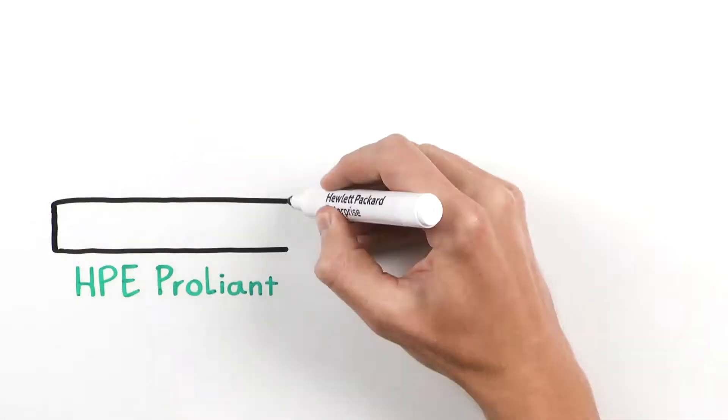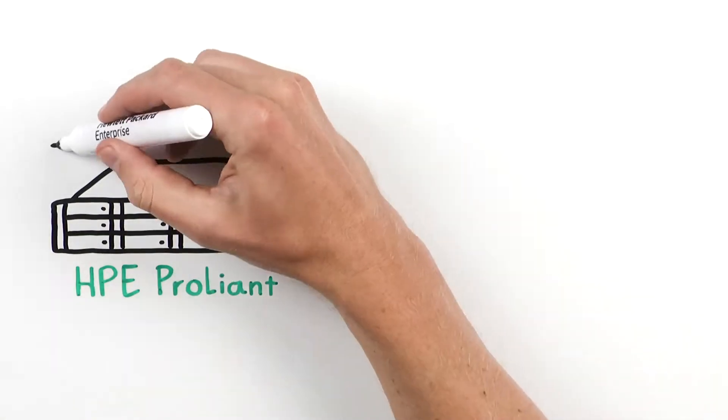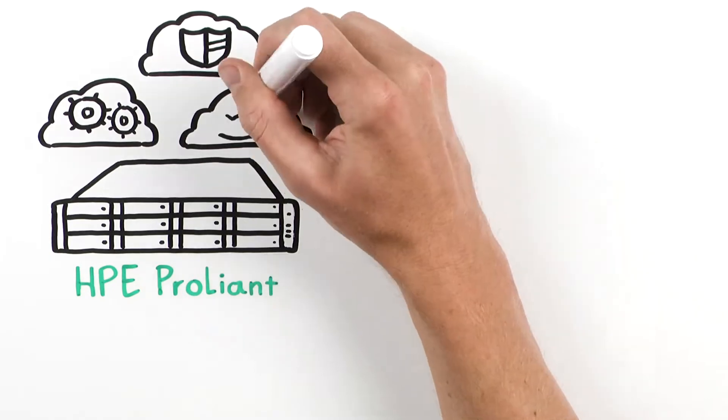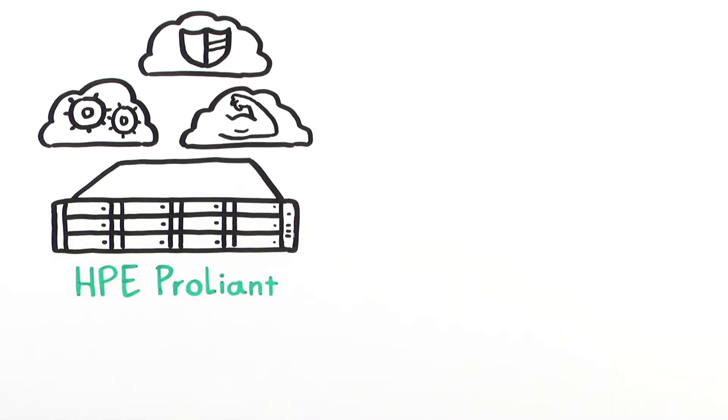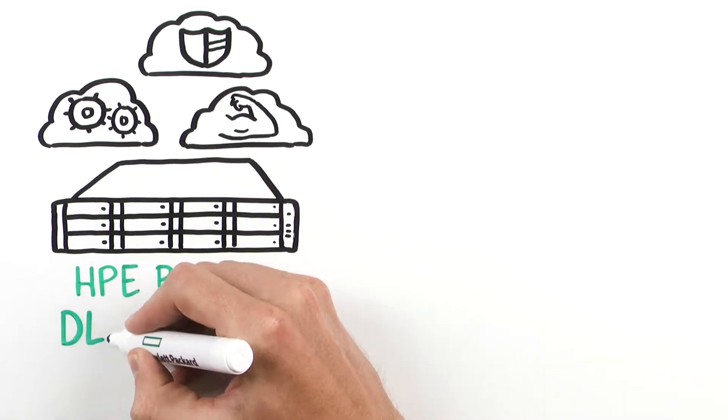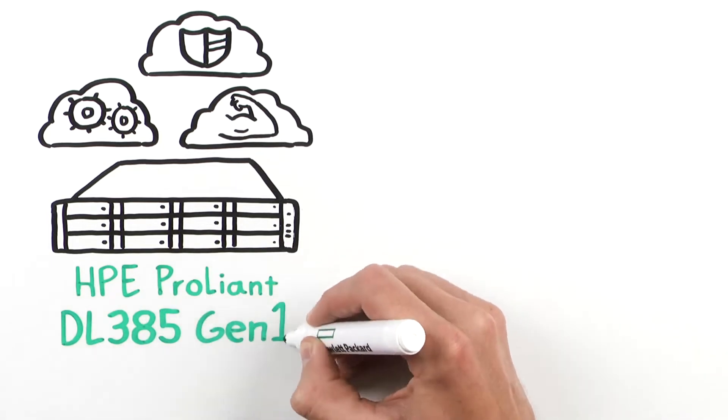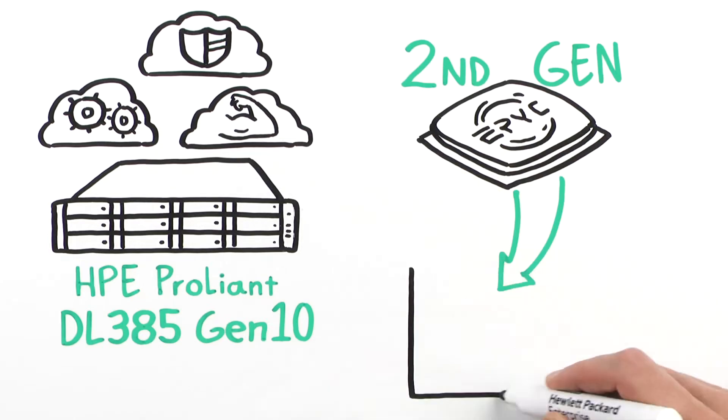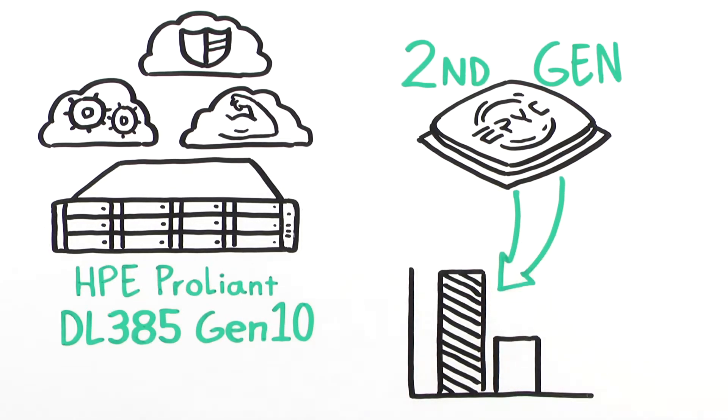HPE ProLiant is the intelligent foundation for hybrid cloud, delivering unmatched automation, security, and optimization. Building on that foundation, the HPE ProLiant DL385 Gen10 offers the second-generation AMD EPYC processor, delivering up to two times the performance of the prior generation.